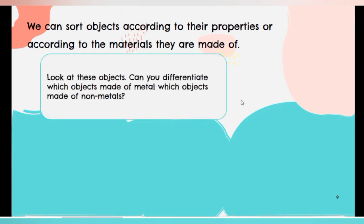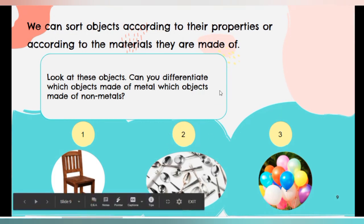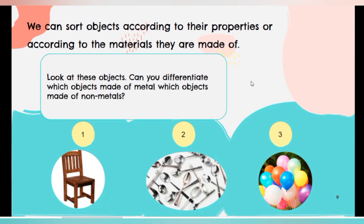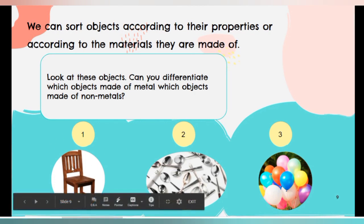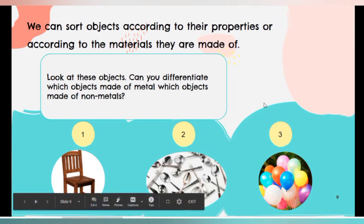Let's look at these objects. The object made of metal is the spoon. The rest is made of non-metals. This chair is made of wood and this balloon is made of rubber.